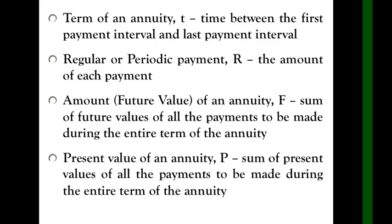There are different terms that we will find out in discussing this topic. First, term of annuity, or t, is the time between the first payment interval and the last payment interval. This is the time between the first payment you made until the last time of the payment interval. Regular or periodic payment, R, is the payment you give. For example, every month I give 1,000 pesos, so 1,000 pesos is my periodic payment or regular payment.